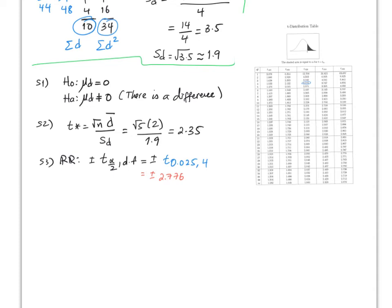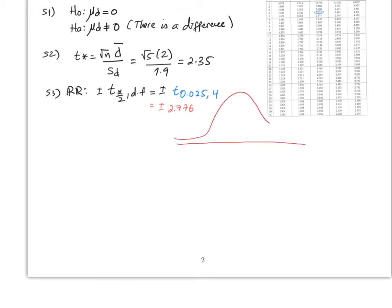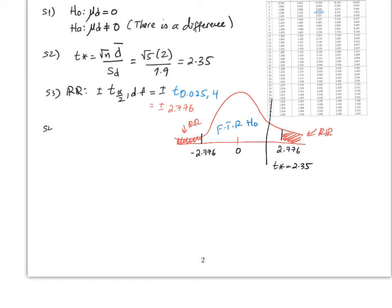Drawing the rejection region: 2.776 is the right-tail cutoff and negative 2.776 is the left-tail cutoff. Values beyond those tails lead to rejecting H0; values in the middle lead to failing to reject. Our t-star of 2.35 falls in the middle, so the conclusion is fail to reject H0 — there is not enough evidence to reject that there is no difference, meaning no evidence that the new shoes make you jump higher.